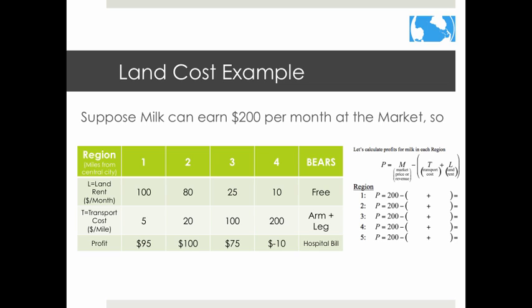We can work out profits for each piece of land using the equation: P = M - (T + L), where M is the market price, L is the land rent and production cost, and T is the transport cost. Because different crops have different transportation costs and land costs vary, you can use this mathematical model to determine what to grow. According to this scenario, it is most profitable to produce milk in zone 2. In zone 4, a farmer would actually lose money.